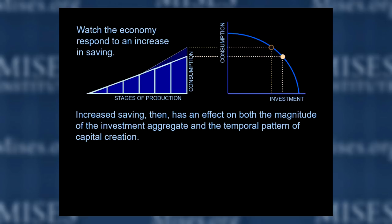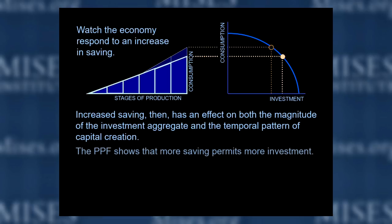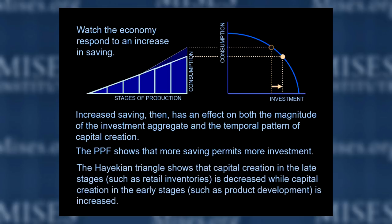Increased saving results in reallocation of resources among the stages of production. The two effects — derived demand and time discount — have their separate and complementary effects on the capital structure. Watch the structure of production respond to an increase in saving. Note you get an emergence of another stage, a sixth stage, but not as much consumption going on because people are saving more. Increased saving has an effect on both the magnitude of the investment aggregate and the temporal pattern of capital creation. The PPF shows that more saving permits more investment. The Hayekian triangle shows that capital creation in the late stages, such as retail inventories, is decreased, while capital creation in the early stages, such as product development, is increased.